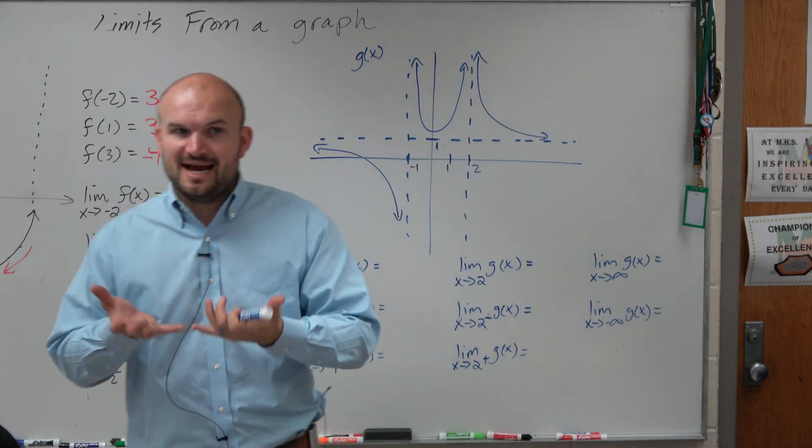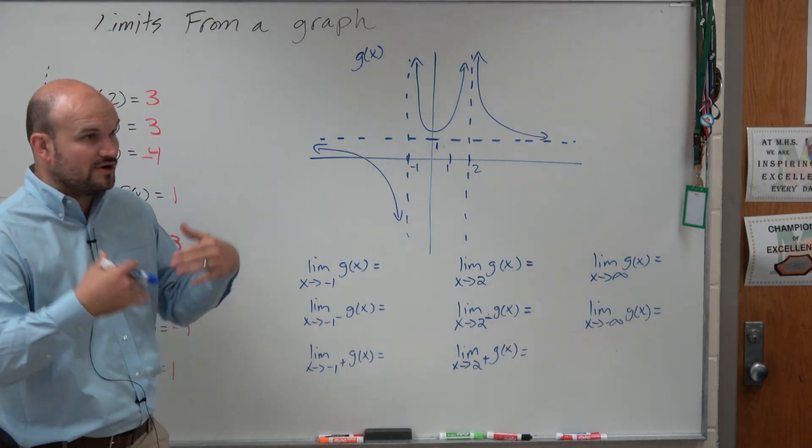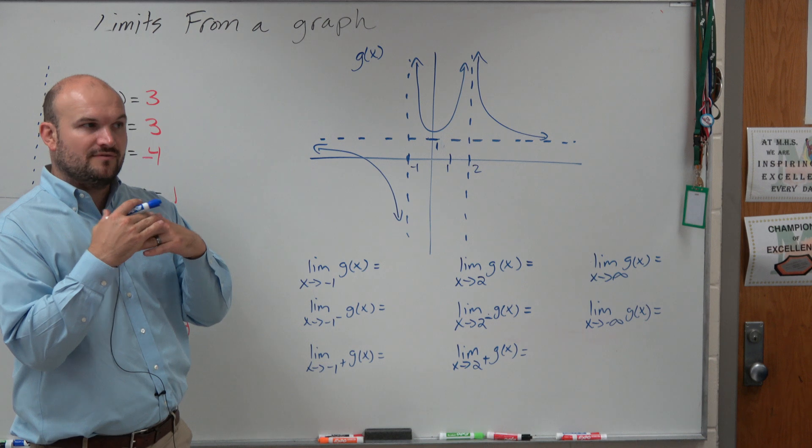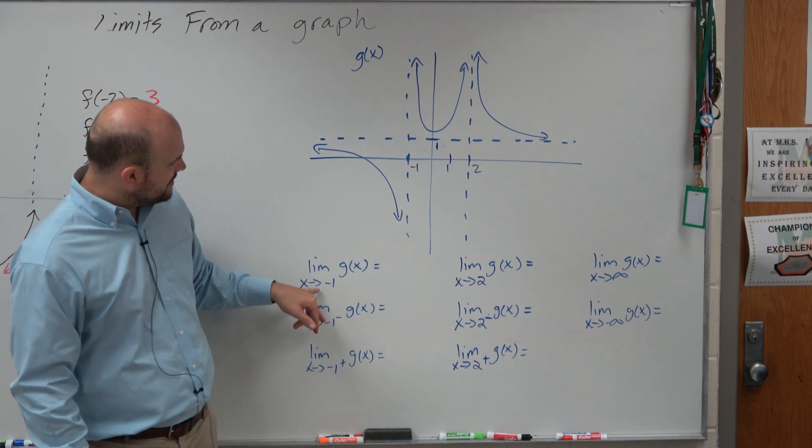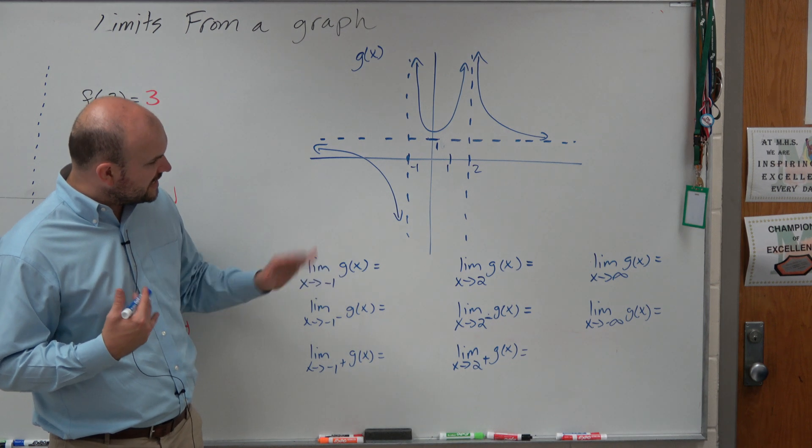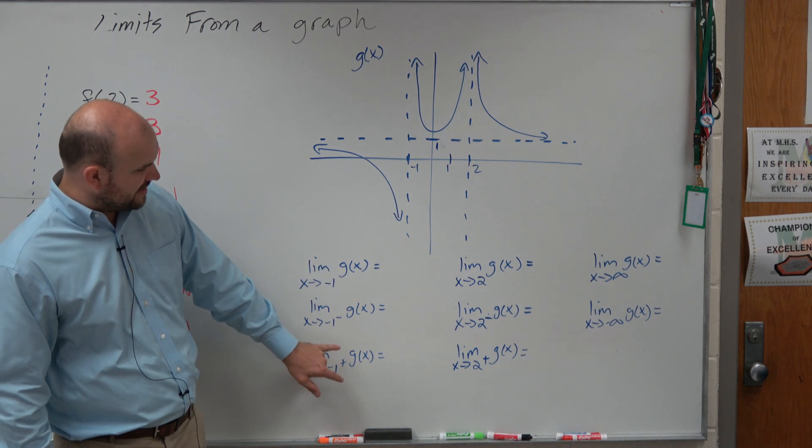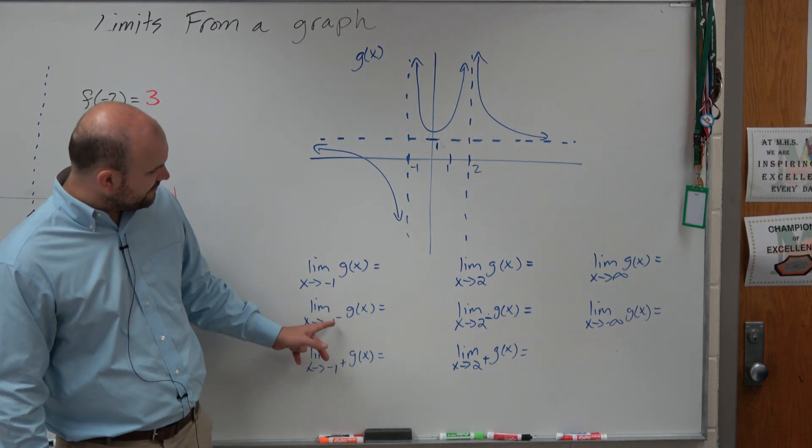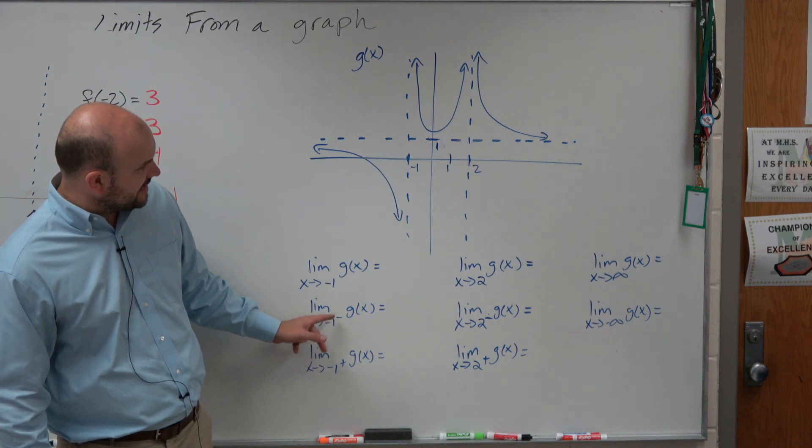But again, just the main idea that we're going to be looking for is where is the graph approaching from different points? So this one, we're looking at where the graph is approaching at negative 1. Actually, let's just do the left and right hands first. So here, we're looking for where's the graph as x is approaching negative 1 from the left.